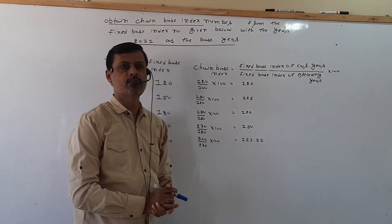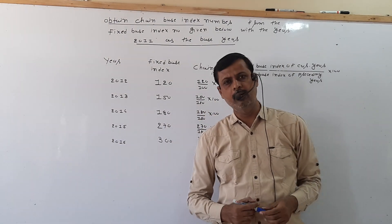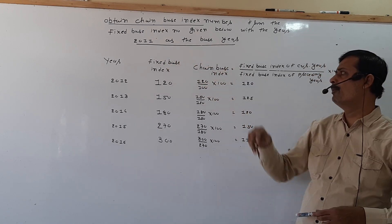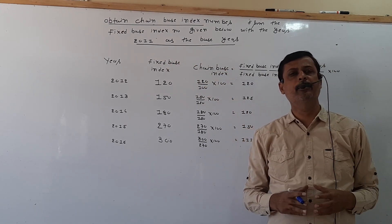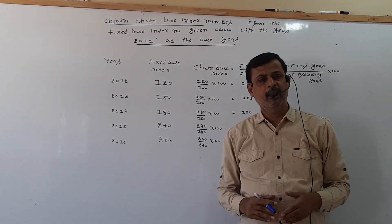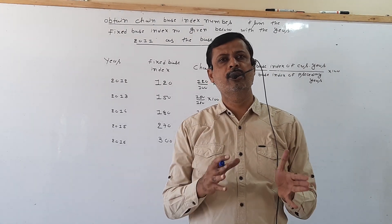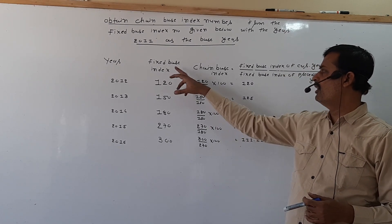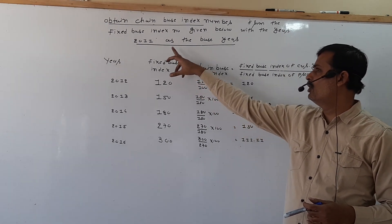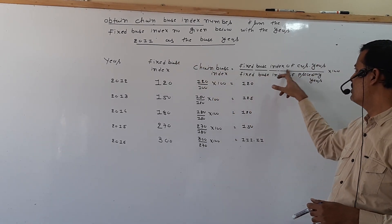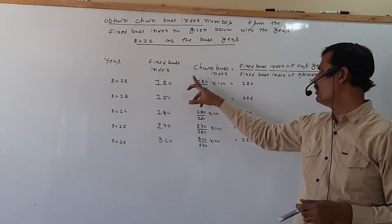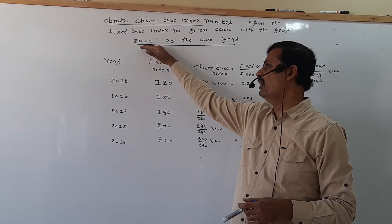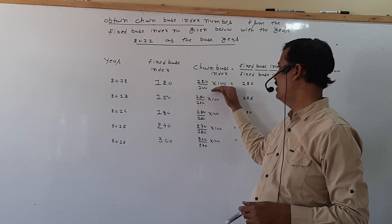So here we covered fixed base into chain base index. Only one thing to remember: in this example, 2011 is given as the base year. In the previous example, when the base year is not given, we take the first year index as 100. In this example, fixed base index of current year 120, upon fixed base index of preceding year — 2012 preceding is 2011, and the base year index is 100 — into 100, that is 120.